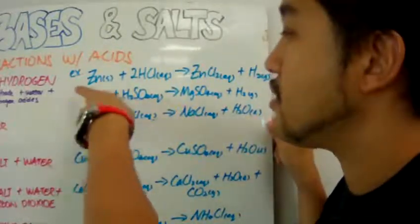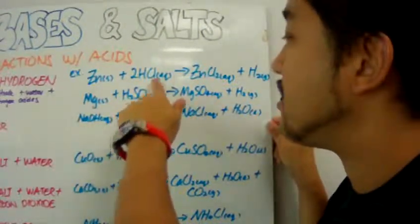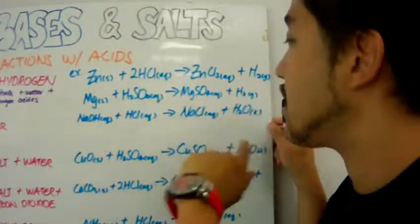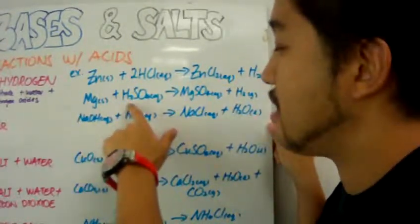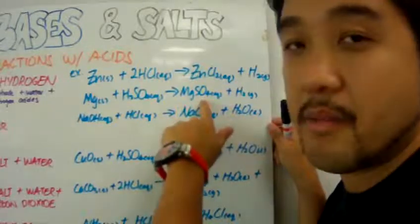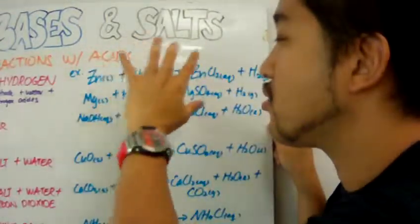So here are some specific examples. Zinc solid, zinc metal, you put it in hydrochloric acid, you get zinc chloride and hydrogen gas. Another example is magnesium with sulfuric acid - you get magnesium sulfate and hydrogen gas. You can use this to do the pop test.